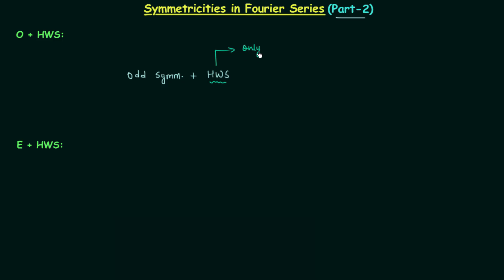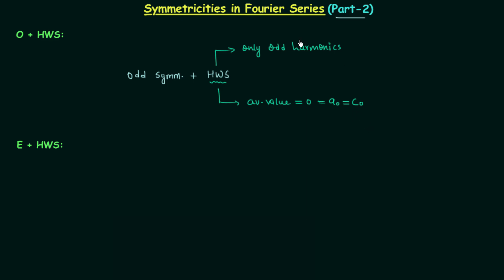From the example waveform of a half wave symmetric signal, the average value is equal to zero, because the positive area is cancelled out by the negative area. The average value equals A0, and A0 equals C0. So these are two important results due to half wave symmetry.